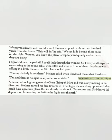I tiptoed down the path till I could look through the window. Sir Henry and Stapleton were sitting at the round table with coffee and wine in front of them. Stapleton was talking in a lively manner — lively manner means in a happy, joyful way — but Sir Henry looked pale. Pale means yellowish; he was yellow with fear, scared that Stapleton might attack him.